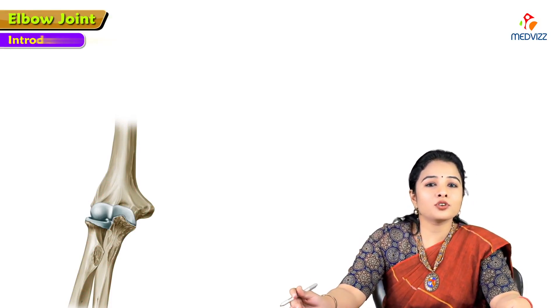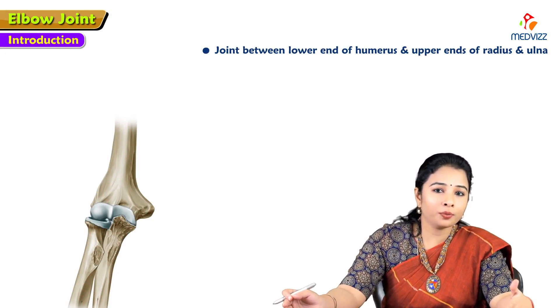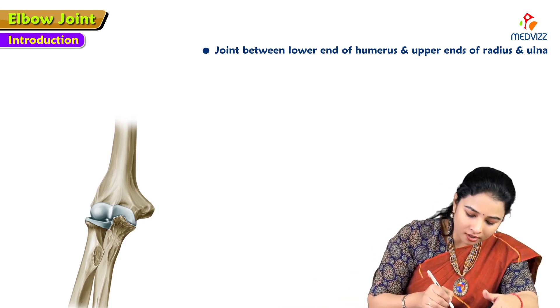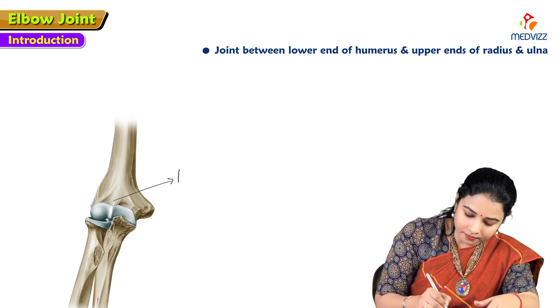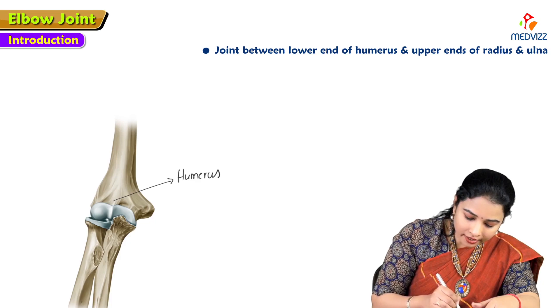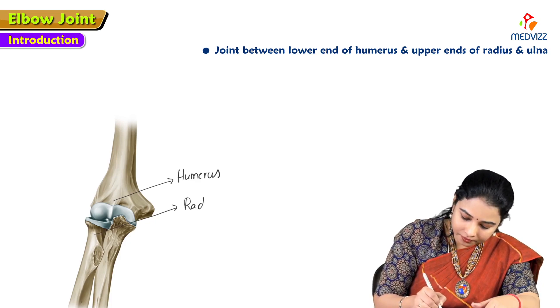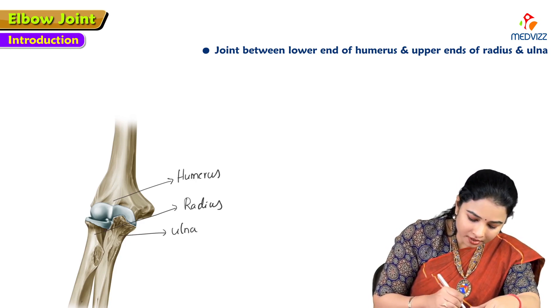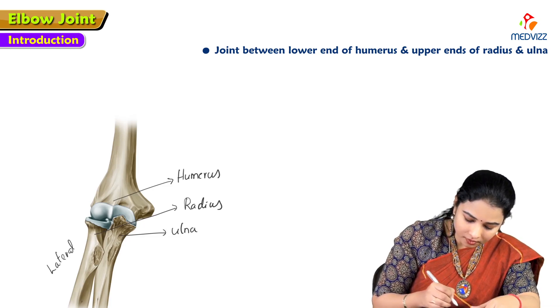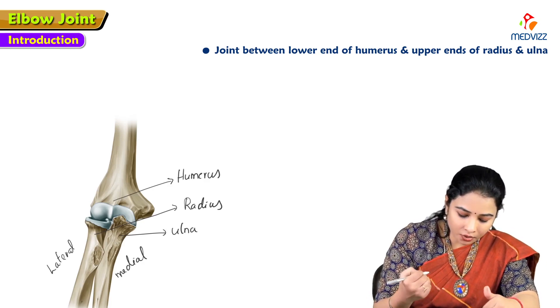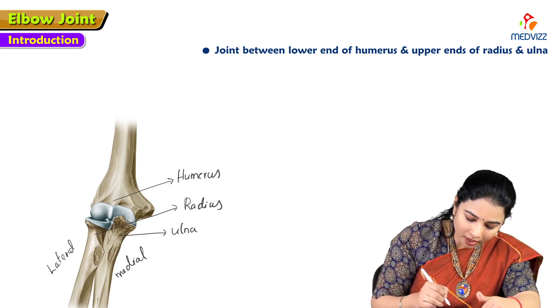Hello everyone, today's topic is the elbow joint. The elbow joint is the joint between the lower end of the humerus and the upper ends of the radius and ulna. In this image, you can see the lower end of the humerus articulating with the upper end of the radius and ulna. The radius is the lateral bone and the ulna is the medial bone. The lower end of the humerus has four parts.